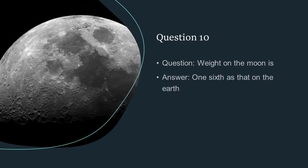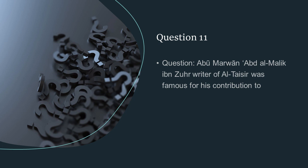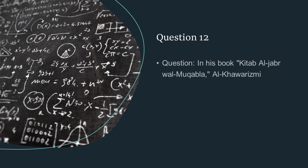Weight on the moon is one sixth as that on the earth. Abu Marwan Abdul Malik Ibn Zohr writer of Al Taiseer was famous for his contribution to surgery. In his book Kitab al-Jabar al-Maqala, al-Khwarizmi solved linear and quadratic equations.